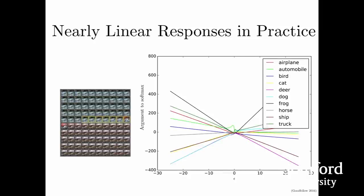If we go and look for this in practice, we can take a convolutional network and trace out a one-dimensional path through its input space. We choose a clean example—an image of a white car on a red background—and choose a direction to travel through space, with a coefficient epsilon multiplied by this direction. When epsilon is negative 30, we're subtracting a lot of this unit vector direction; when epsilon is zero, we're at the original image; and when epsilon is positive 30, we're adding the direction to the input.